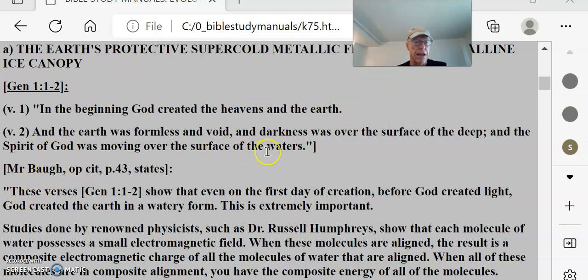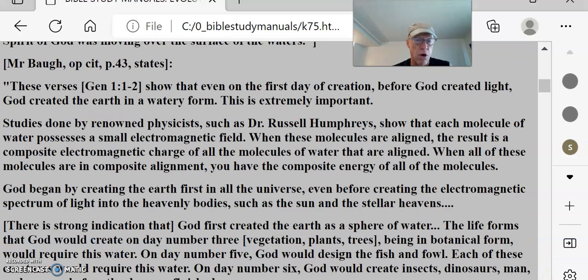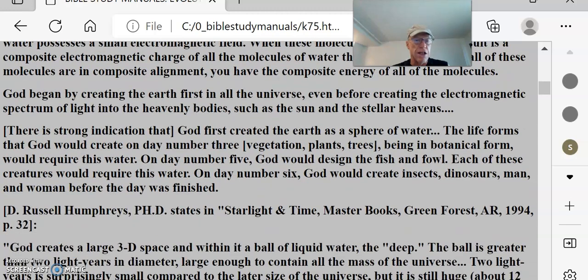Mr. Baugh says, These verses show that even on the first day of creation, before God created light, God created the earth in a watery form. This is extremely important. Studies done by renowned physicists such as Dr. Russell Humphreys show that each molecule of the water possesses a small electromagnetic field. When these molecules are aligned, the result is a composite electromagnetic charge of all the molecules of water that are aligned. When all of these molecules are in composite alignment, you have the composite energy of all the molecules. God began by creating the earth first in all the universe, even before creating electromagnetic spectrum of light into the heavenly bodies, such as the sun and the stellar heavens.